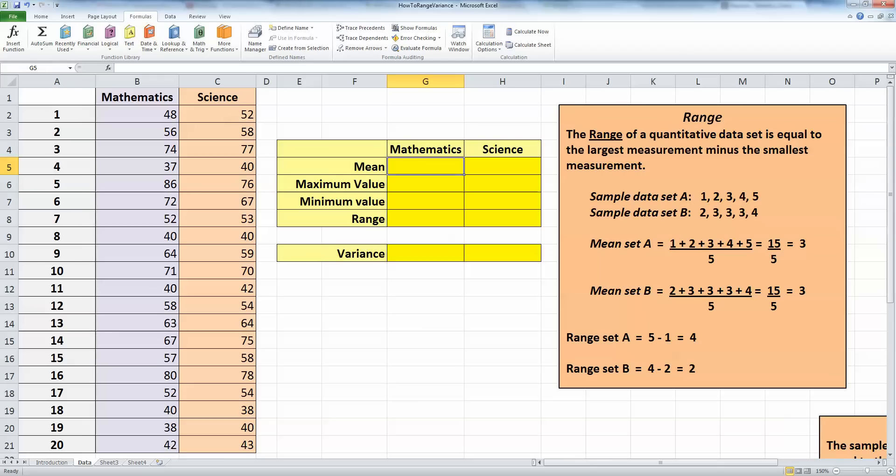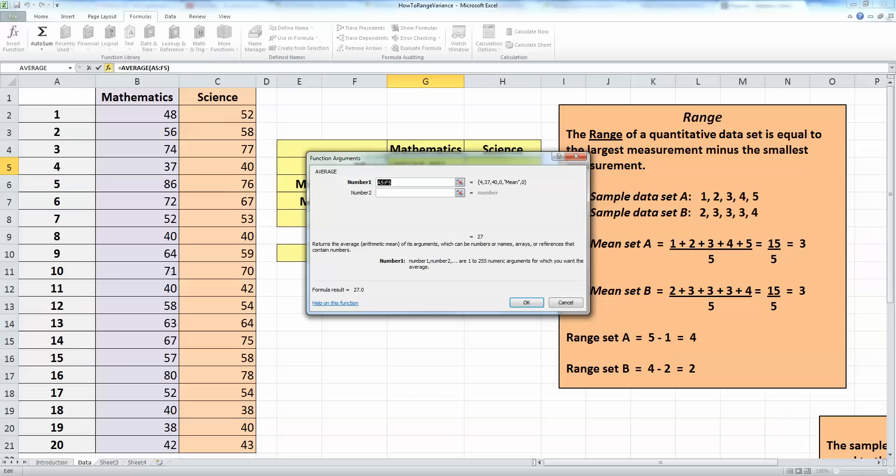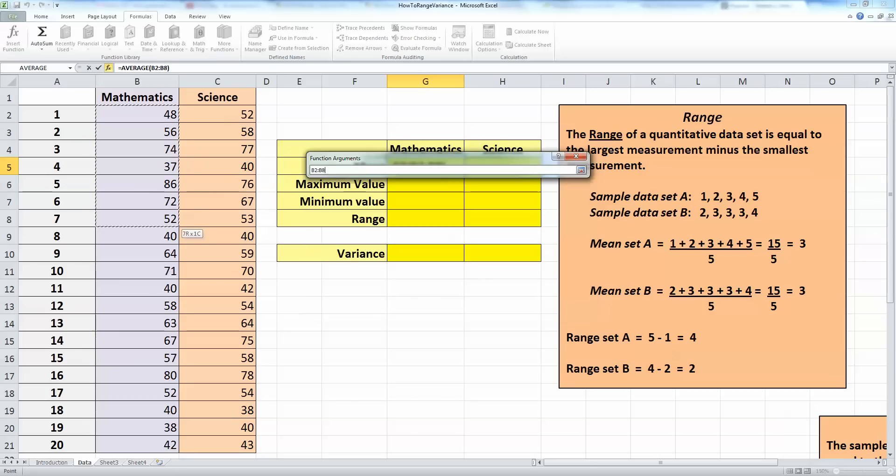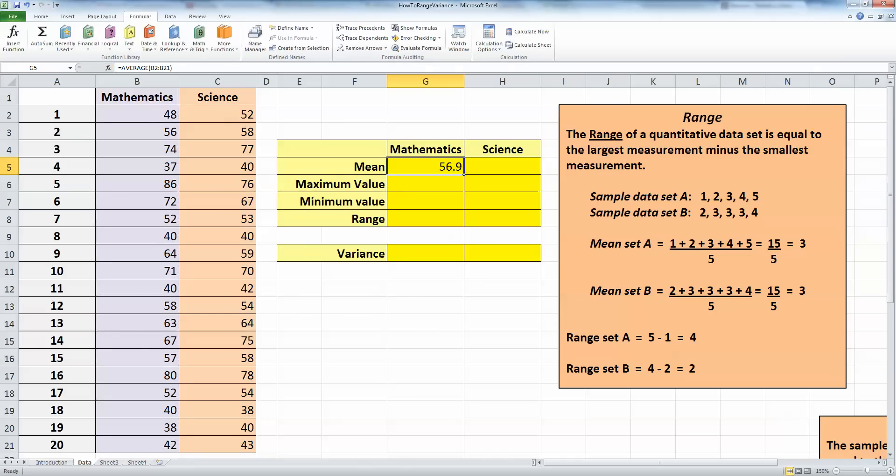So I'm going to use the formulas ribbon across the top here. Now all of the functions that I need are not listed in the commonly used ones here at the top. So I'm going to check on more functions. And Excel has a list of statistical functions here. And the one I need for the mean is the average function. So I'm going to select that. And I'm going to simply select all the data in column B with my mouse. So select and drag, drag and click and select all those values and click OK.